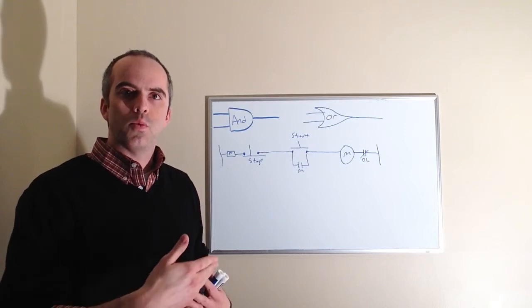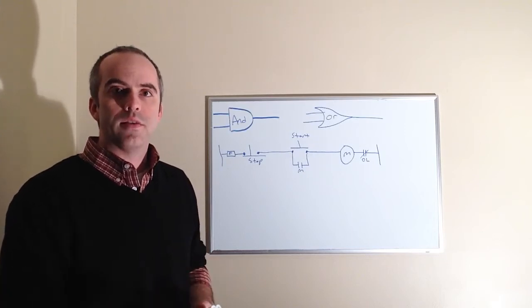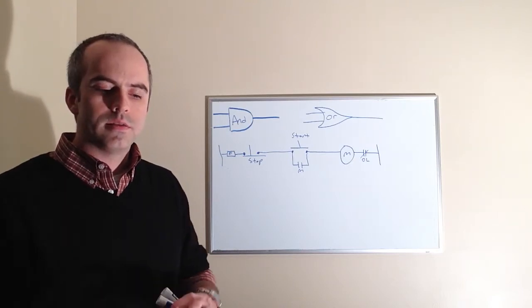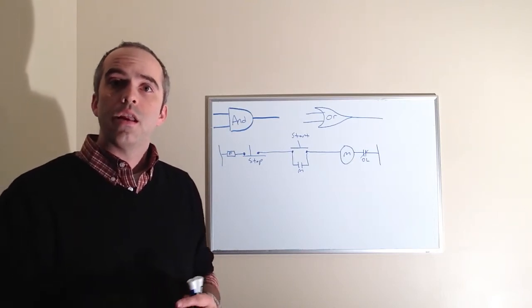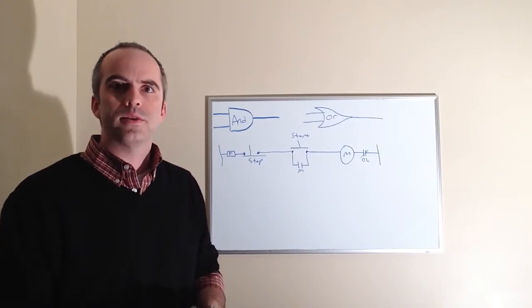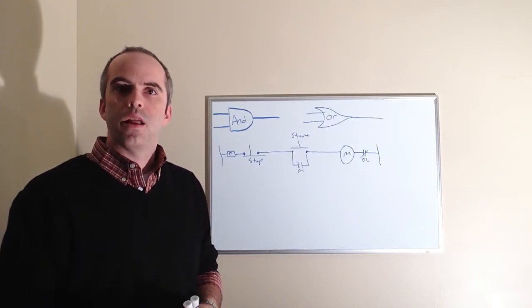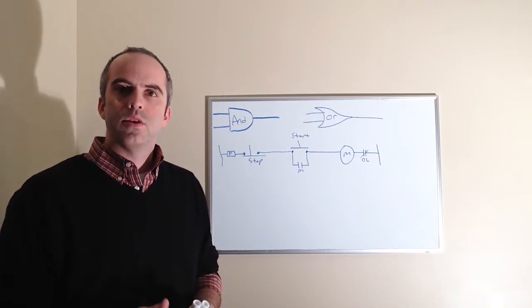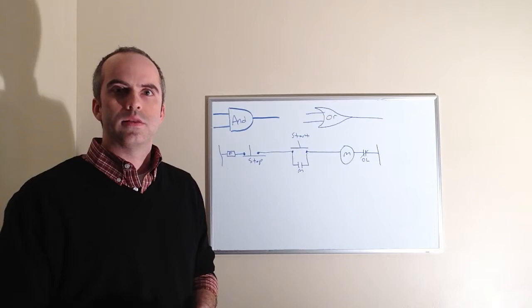What they do is process a series of inputs and make a decision based on what type of gate it is if it's going to have an output. Now these are digital devices, meaning that there's either one or zero, it's on or off. An analog device is something such as a pressure gauge or a flow meter or a level meter, but digital devices are zero and one, so it's either on or off.